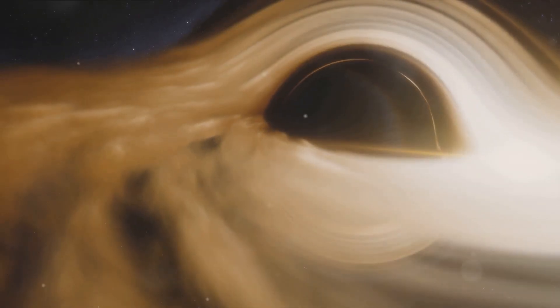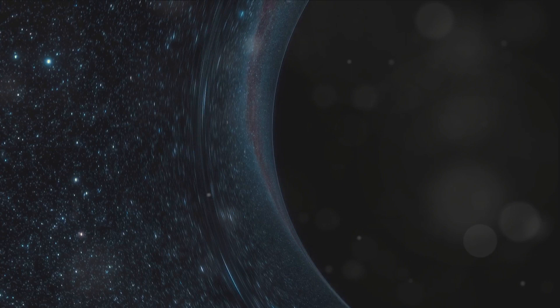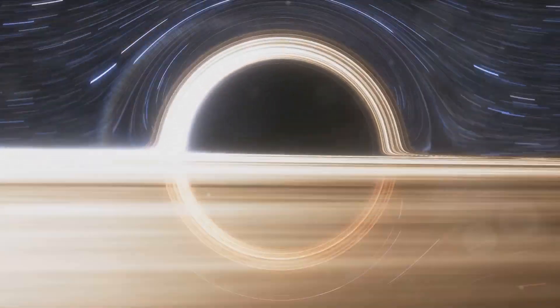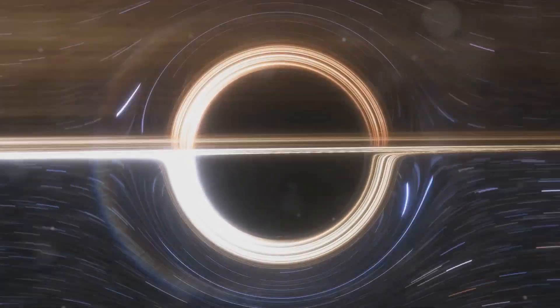But why didn't the solar system form into one giant sphere? Well, gravity pulls everything towards the center, but the centrifugal force caused by the rotation of the cloud counteracts this pull.